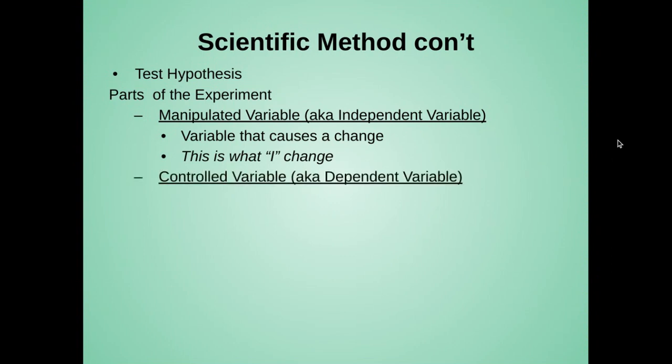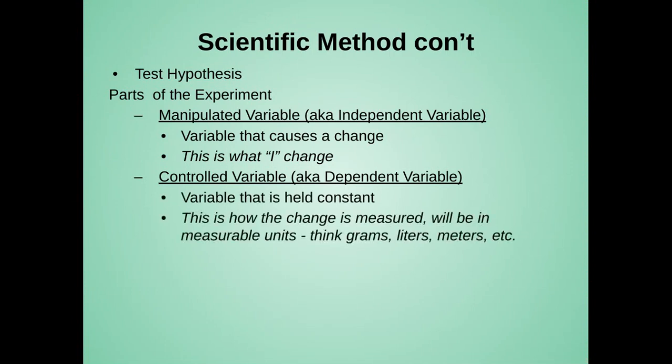The controlled variable, also known as the dependent variable, is the one that is held constant. This is how that change is measured. So when you collect that data, this measurement will be something in a measurable unit, like grams or liters or meters.